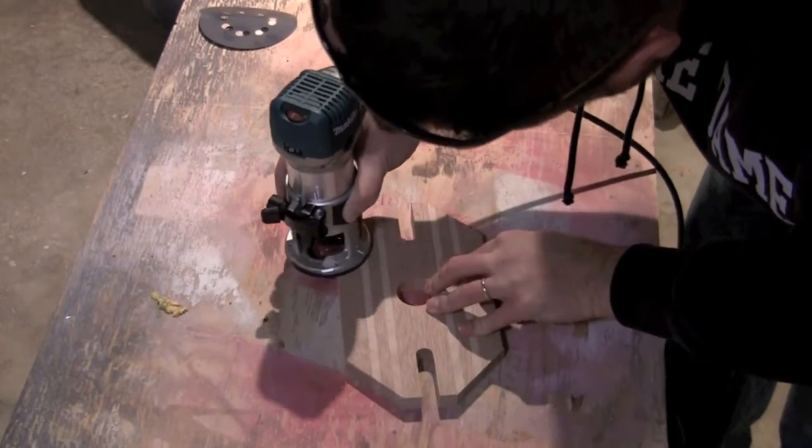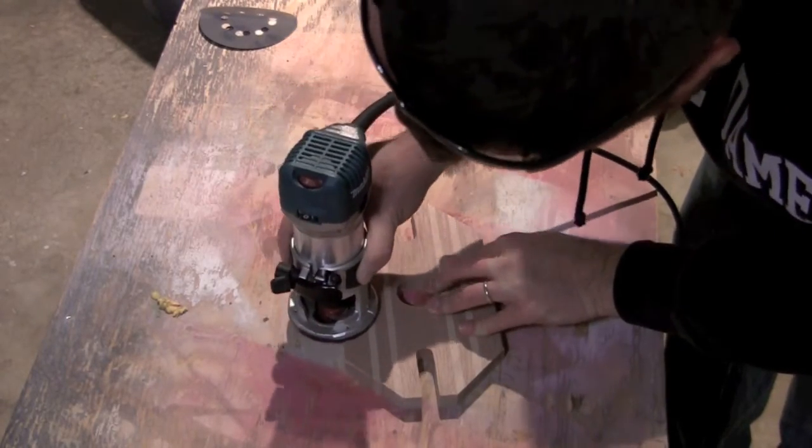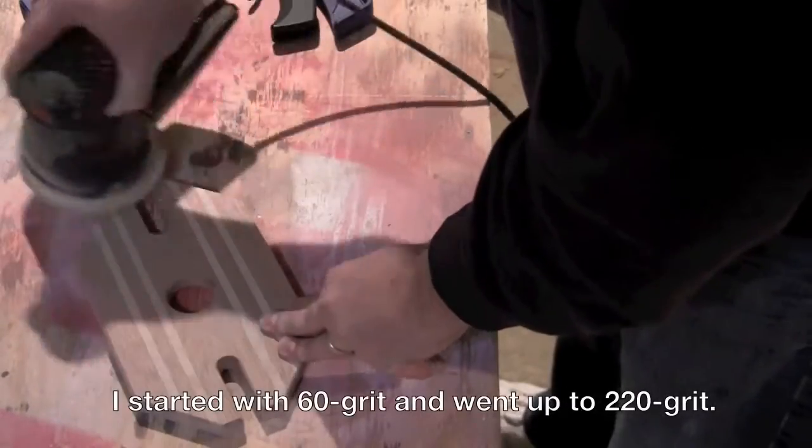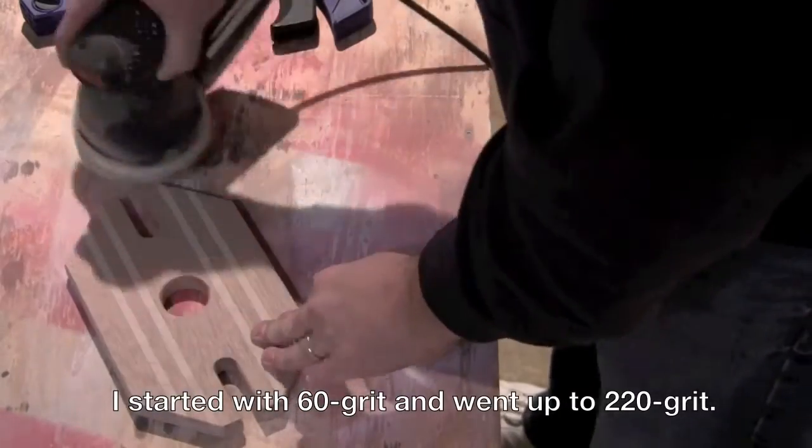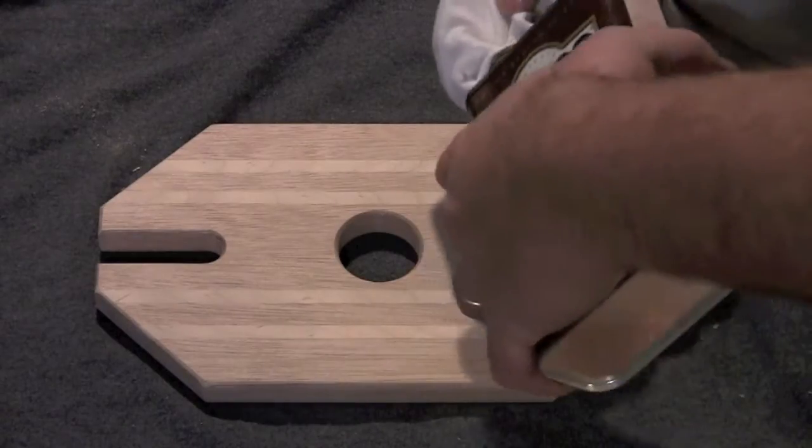I went over all the edges with my round over bit and my hand held router. I did my finish sanding and added a few coats of Danish oil. Once that was dry, I applied a few coats of spray lacquer to protect it.